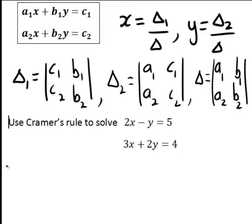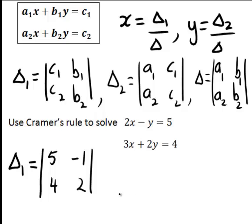So here delta1 is going to be the constants again, c1 and c2, which is 5 and 4, go into the first column of that determinant, and the coefficients in the second column here, in other words the coefficients of the second unknown y, which are negative 1 and 2, go into the next column.